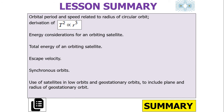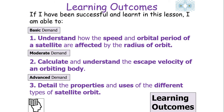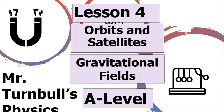In today's lesson we learned that orbital period and speed are related to the radius of a circular orbit; we derived T² ∝ r³; we covered energy considerations and total energy for an orbiting satellite; we established escape velocity; and we covered synchronous orbits and the uses of satellites in low and geostationary orbits, including the plane and radius of a geostationary orbit. I hope you've enjoyed this lesson on orbits and satellites within gravitational fields, and I hope you have a lovely day.